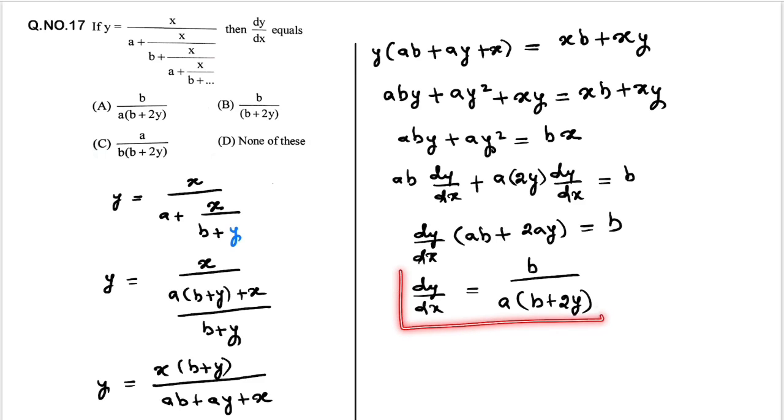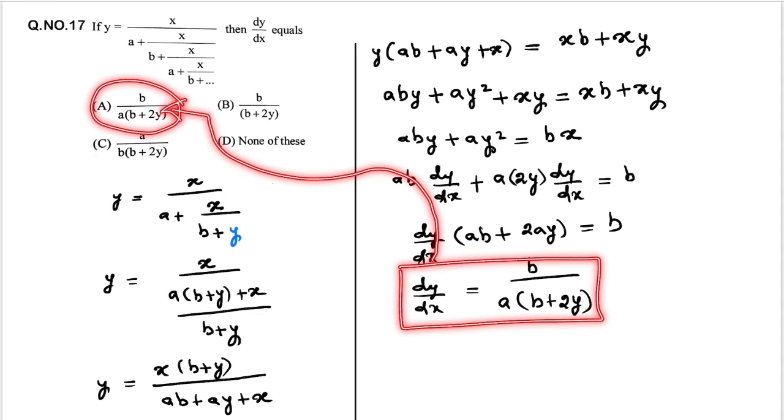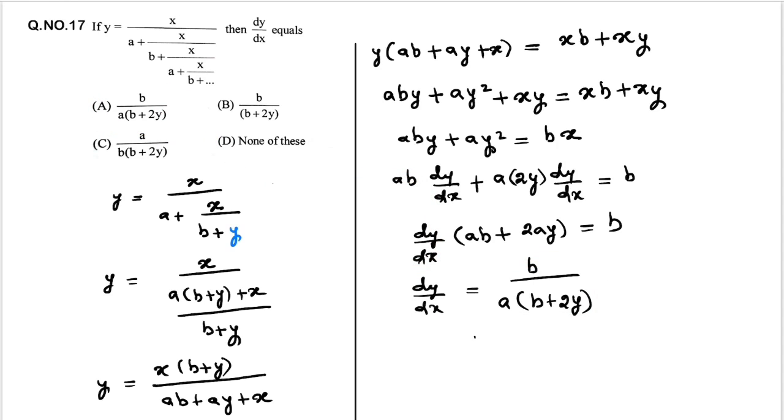So this is our answer. So if you see the options, our option number A is our correct option. So our answer is A.